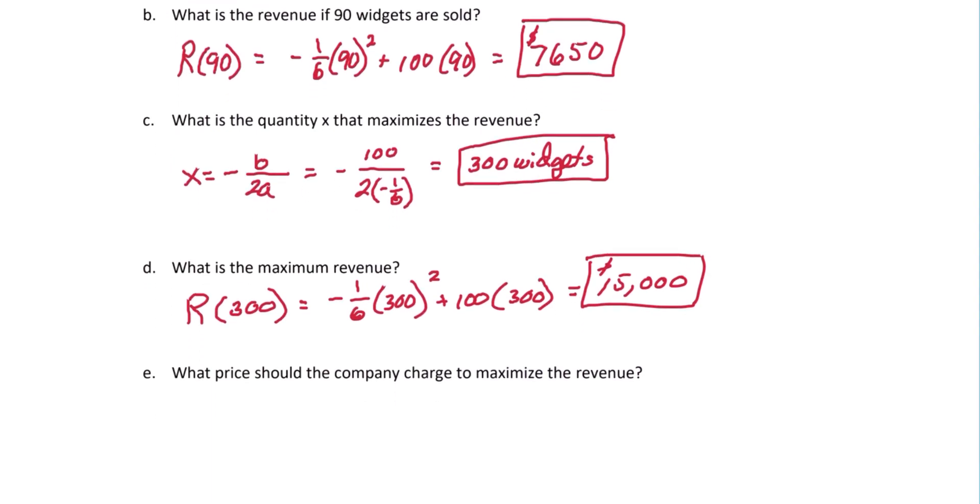And the last question wants to know what price should the company charge to maximize the revenue? So we know the number of units we need to sell, 300. We know what the max revenue will be, 15,000. But what is the price per widget that we need to sell for? The shortcut would be to take the max revenue, 15,000, and divide that by the number of widgets, 300. And this gives us $50.